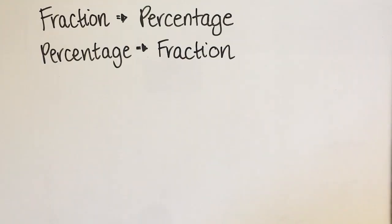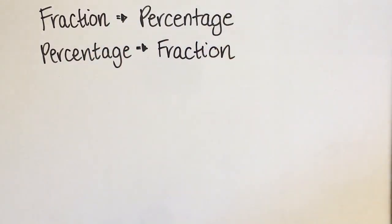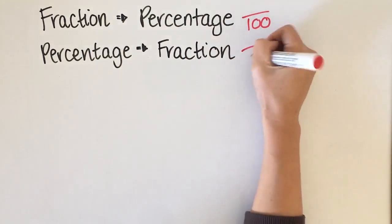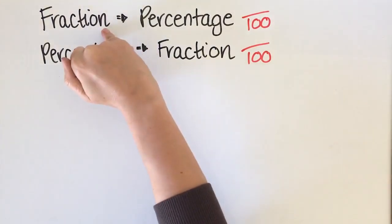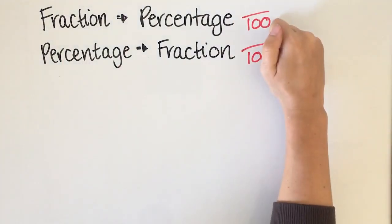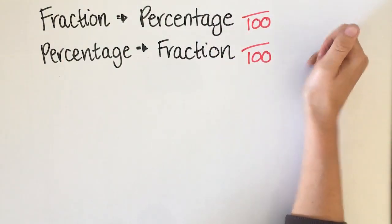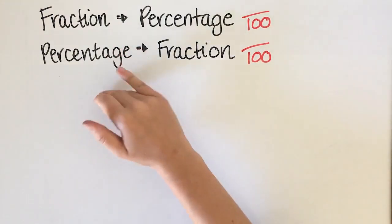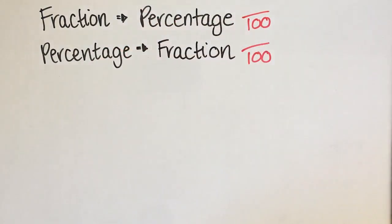For this next one we're going to do fraction to a percentage and percentage to a fraction. In both scenarios what we really want to do is get our fraction to go over a hundred. If we're starting with a fraction we want to put it over 100 because a percentage is out of 100, and if we're starting with a percentage we just put whatever that percentage is over 100.